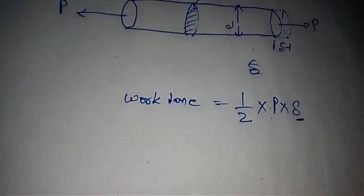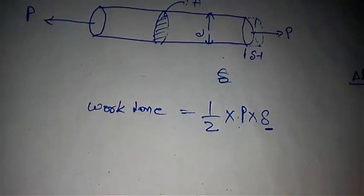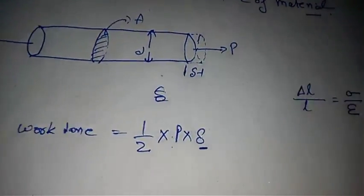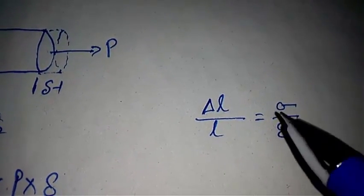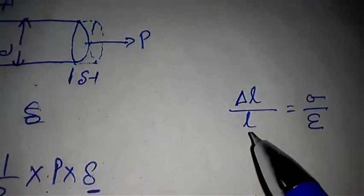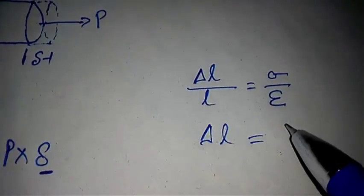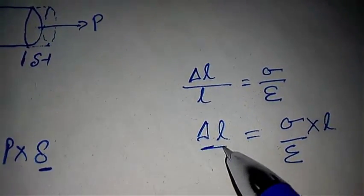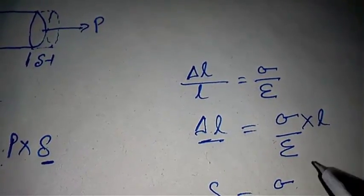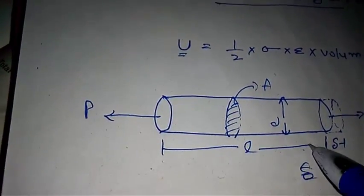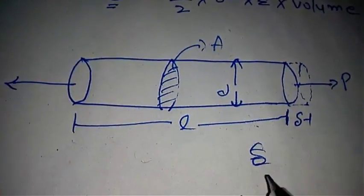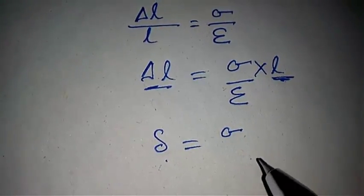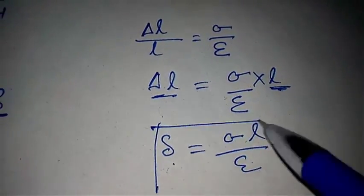Now, what is the value of deflection? As we know, Delta L over L is the strain, which is equal to stress divided by modulus of elasticity E. So Delta L equals stress divided by E, times L. The length of the beam is L, so Delta equals sigma times L divided by E.